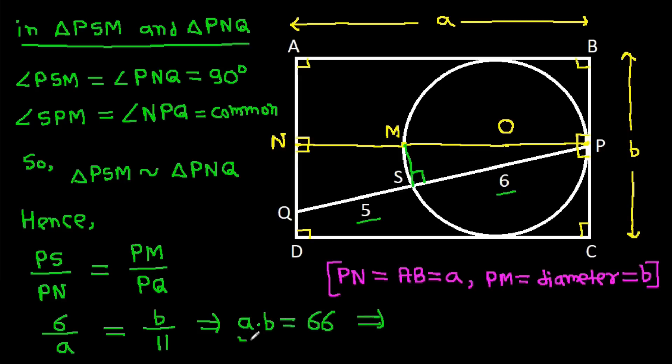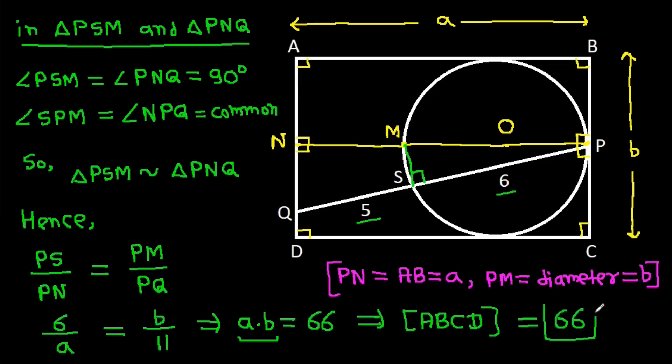And the area of rectangle ABCD is A times B, which equals 66.